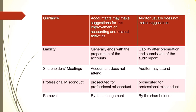Next is shareholders meetings. An accountant does not attend shareholders meetings unless he has personally invested in shares of the company; otherwise, he has no responsibility to attend. Whereas an auditor may attend shareholders meetings because the auditor is appointed by the shareholders. Next is professional misconduct. An accountant is not usually prosecuted for professional misconduct, whereas an auditor can be prosecuted for professional misconduct as per the applicable legal procedures.